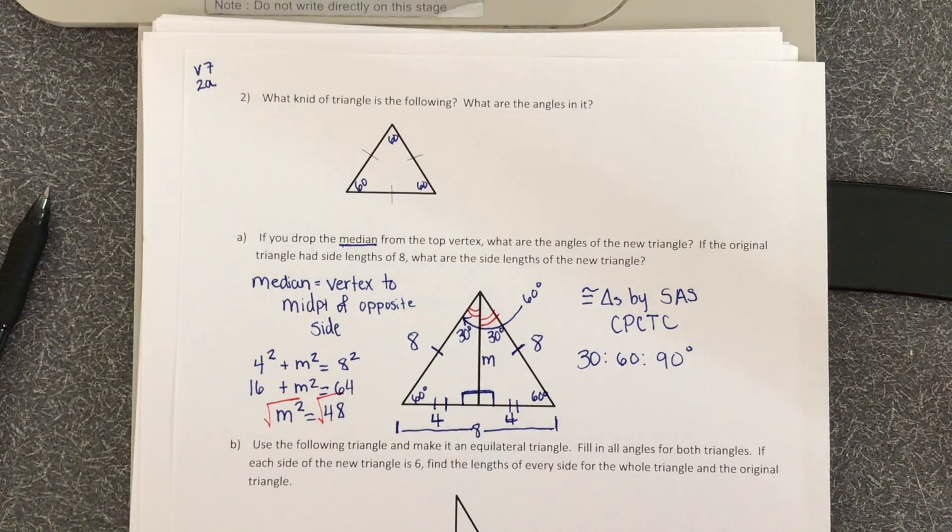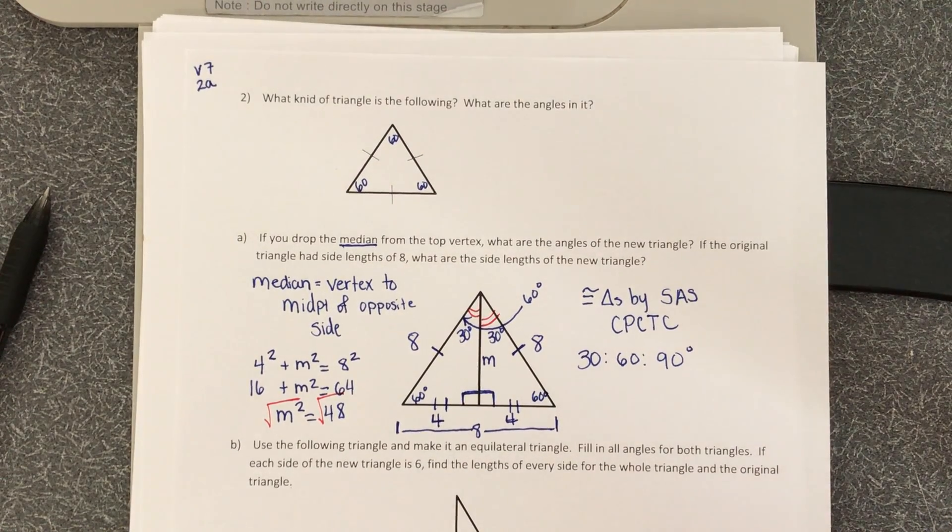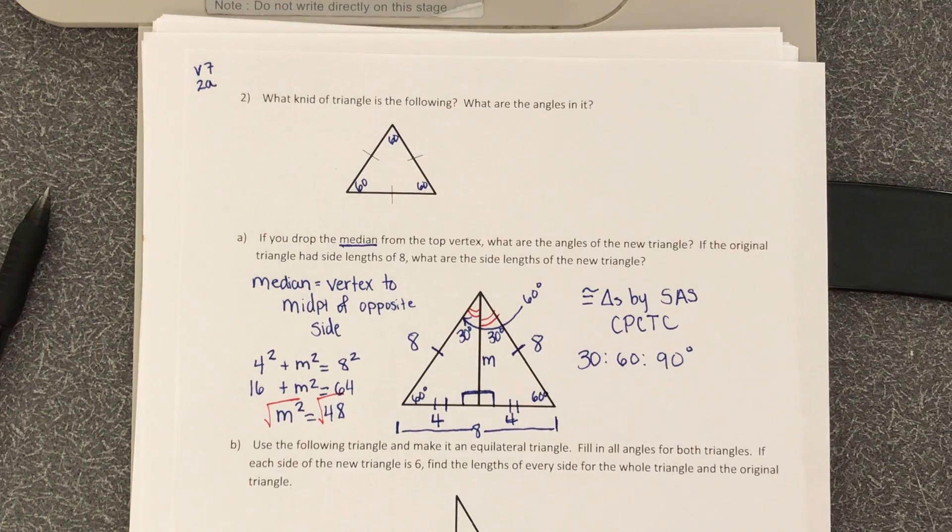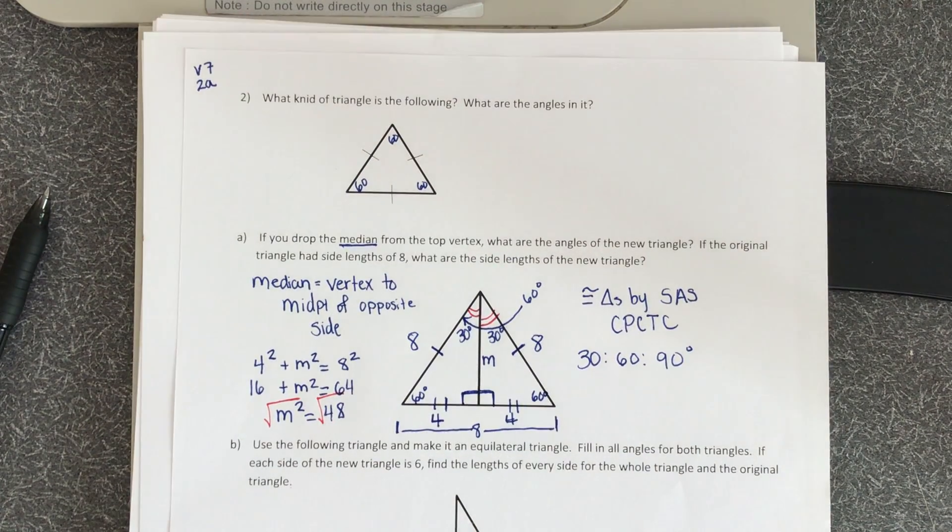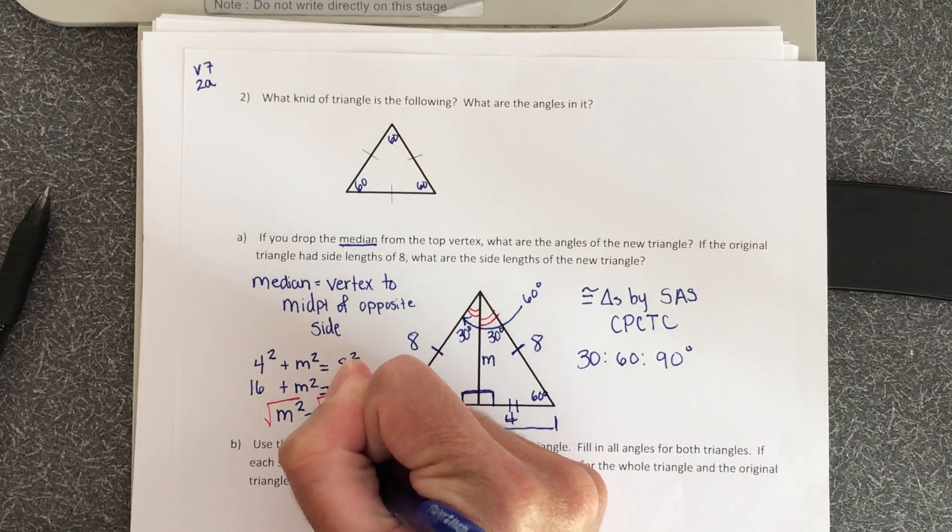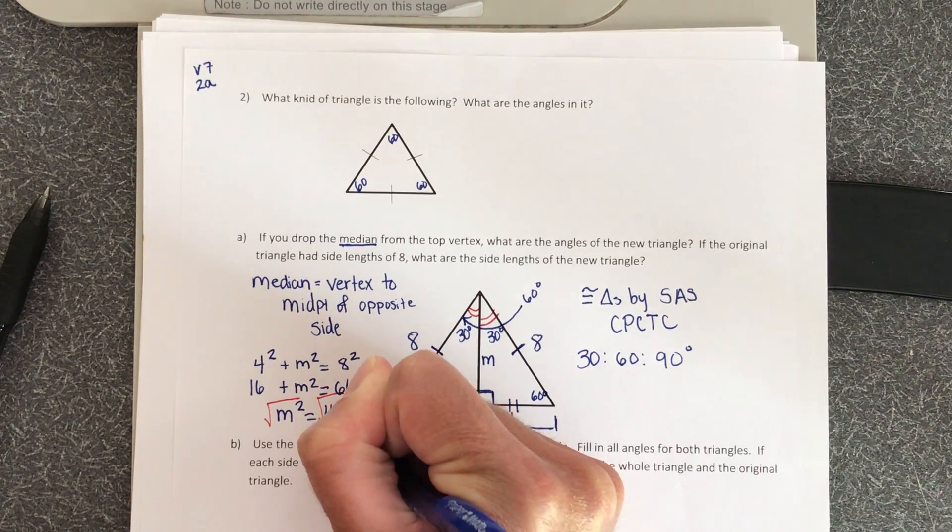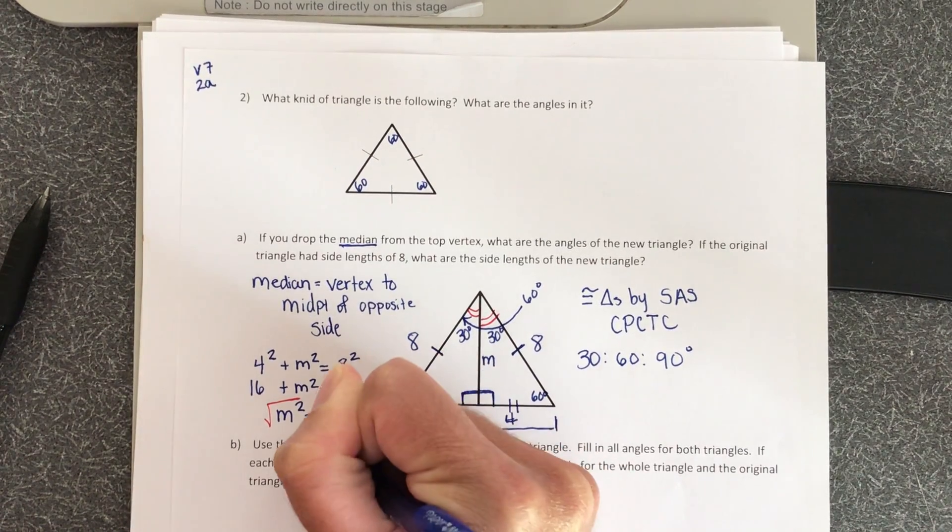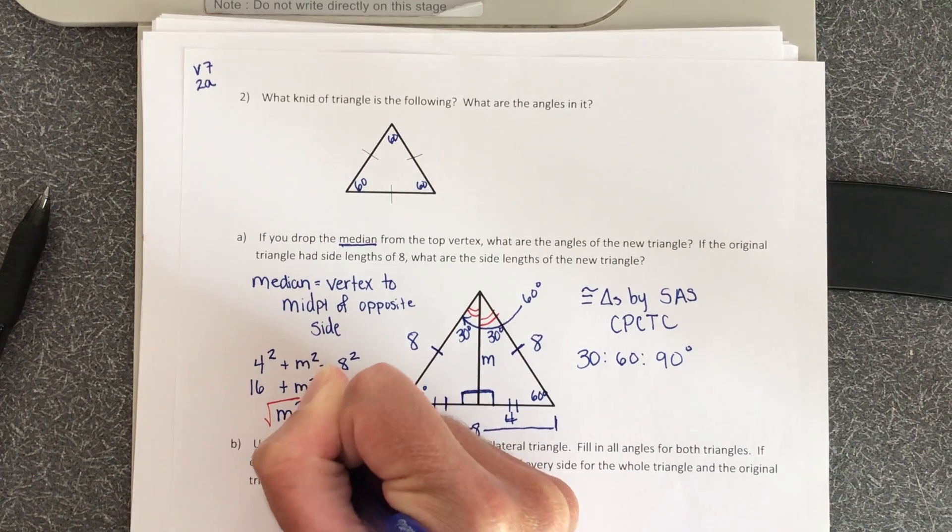So I know that, I know for sure that 3 goes into 48. So 48 divided by 3 is 16. So 3 and then 16 breaks down to 4 and 4. So 3 times 4 times 4 is 48.